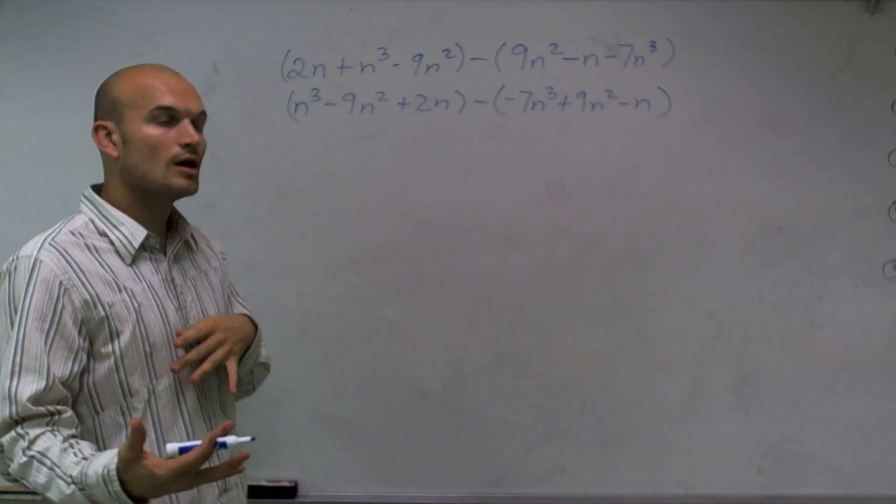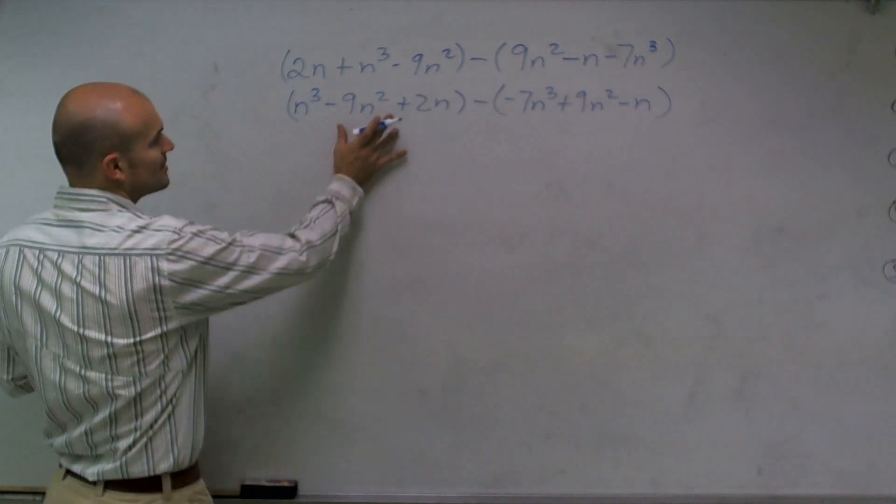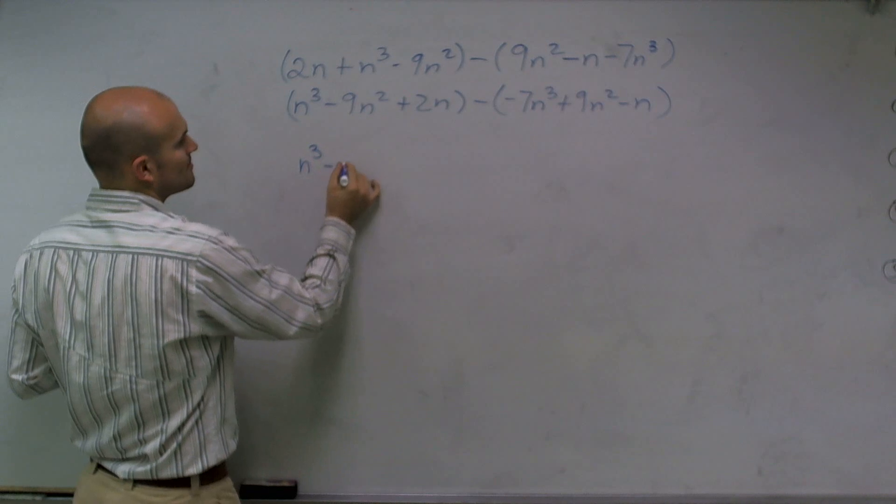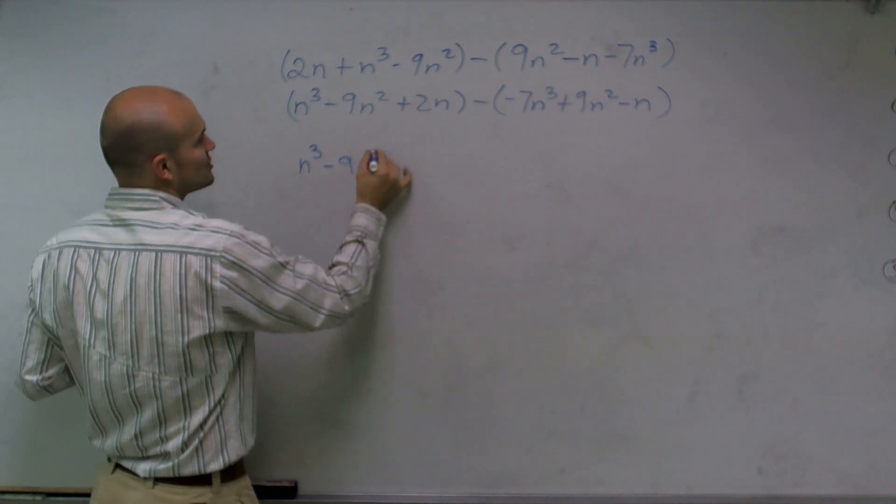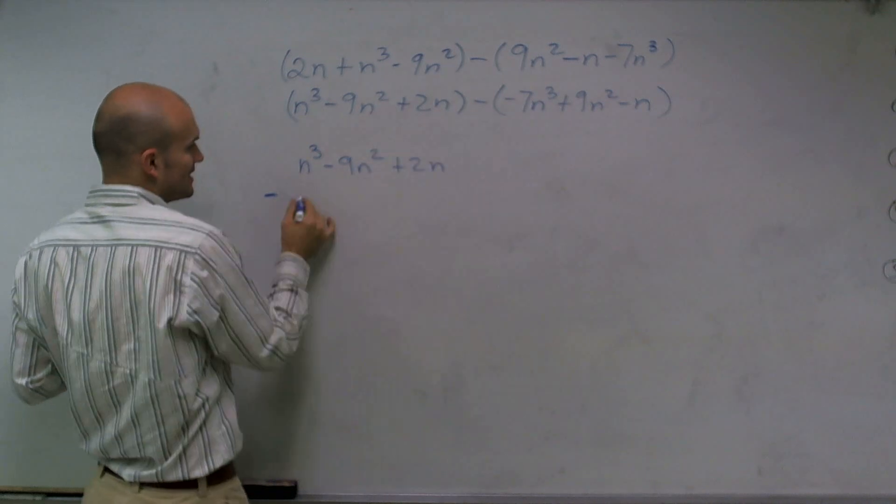So the quick way, just to kind of set it up, but a lot of students might make mistakes here, is to set them up vertically, which is say n cubed minus 9n squared plus 2n minus what's inside this parentheses,